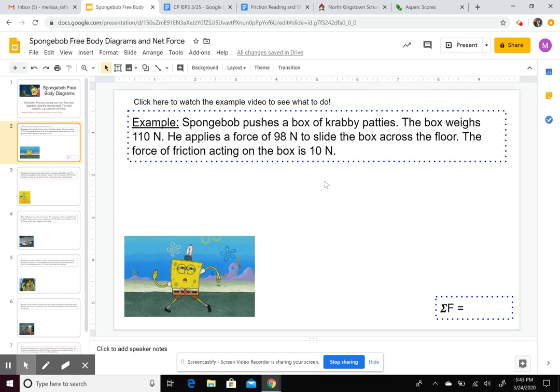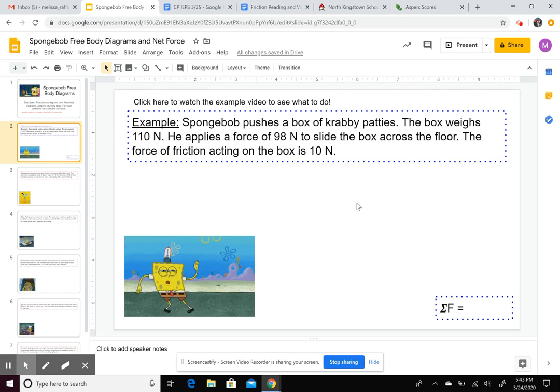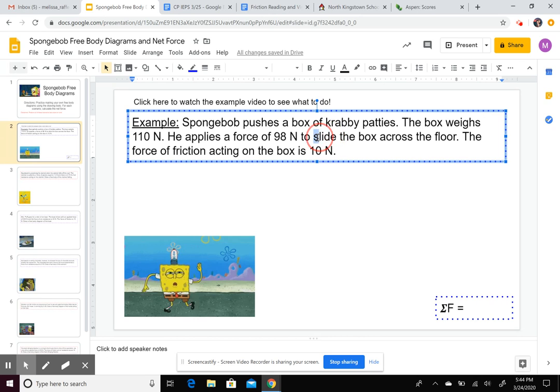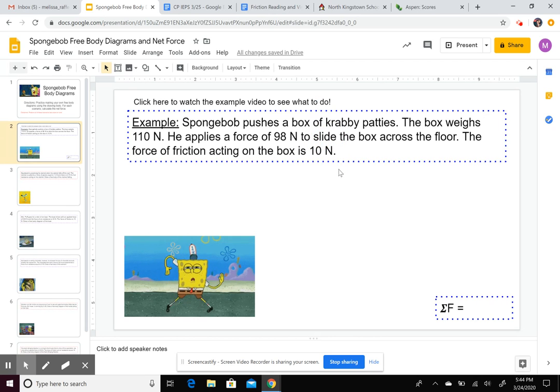So in our first example here, we have SpongeBob. He's pushing a box of Krabby Patties. The box weighs 110 Newtons. There's one force. He's applying a force of 98 Newtons to slide the box across the floor. And because it's sliding against the floor, there's a force of friction there. They tell you that value is 10 Newtons.